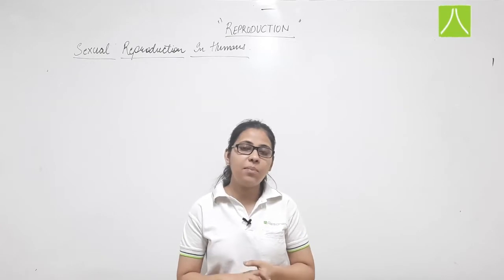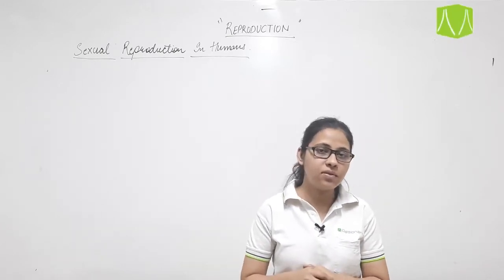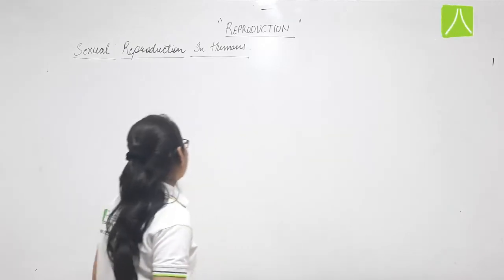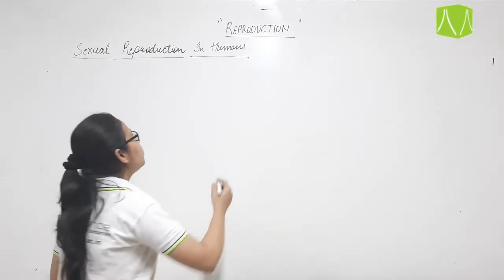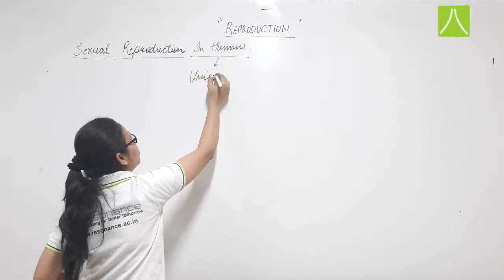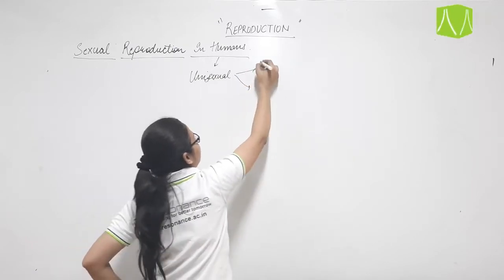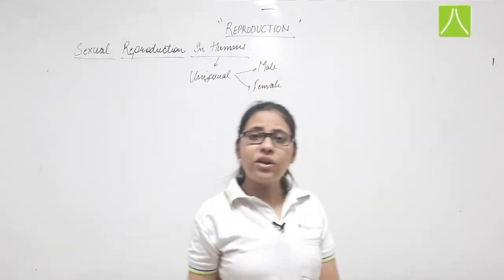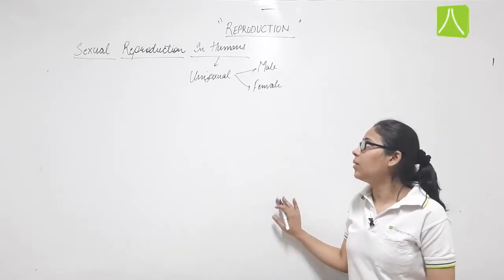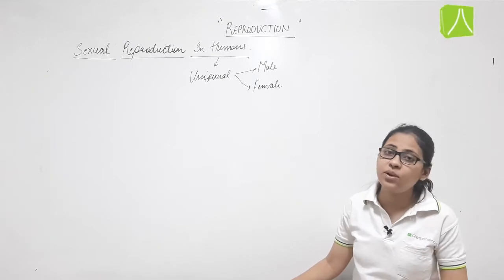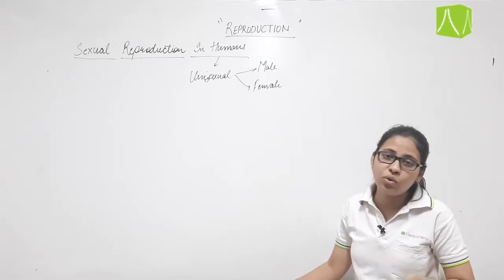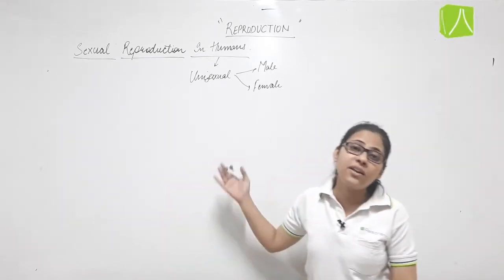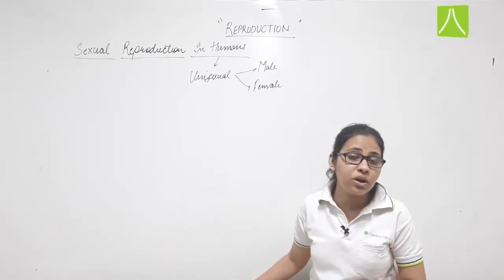Today we will discuss sexual reproduction in humans. In the last lecture we covered sexual reproduction in plants; now we continue with sexual reproduction in humans. Humans are unisexual, meaning both male and female organisms are separate or isolated. Therefore, gametes are also isolated — the male produces a male gamete and the female produces a female gamete — giving us sexual reproduction.